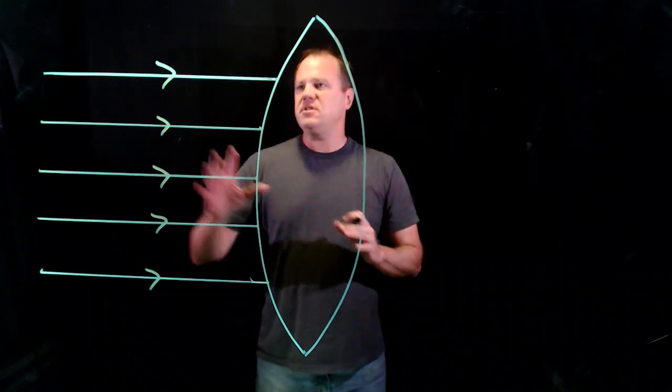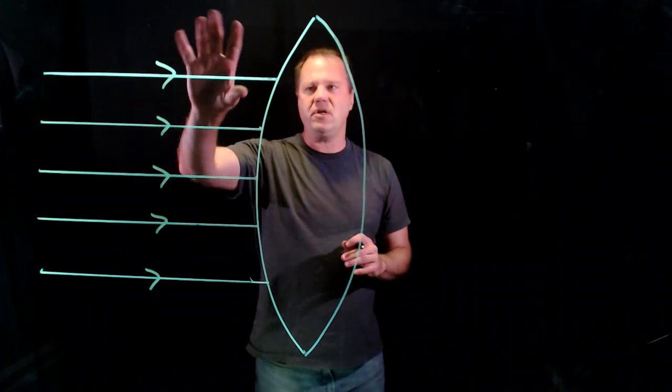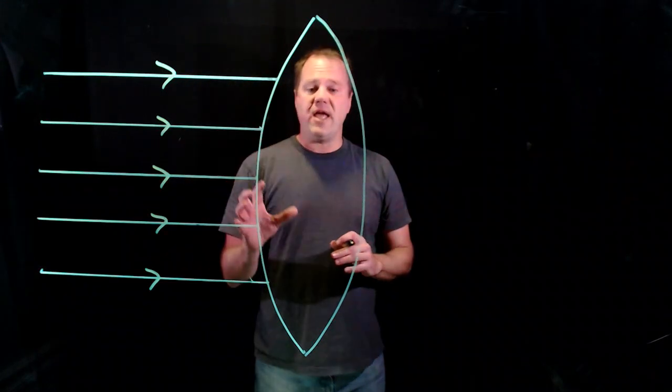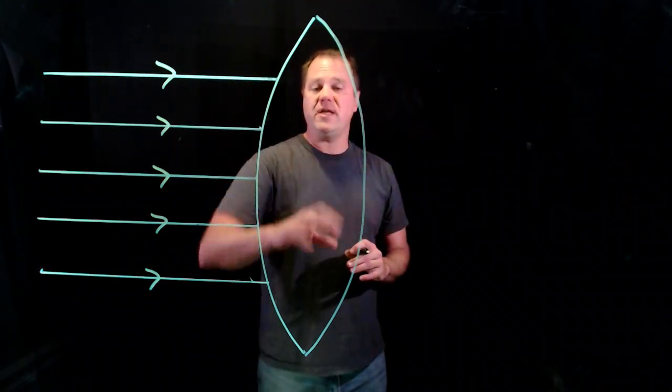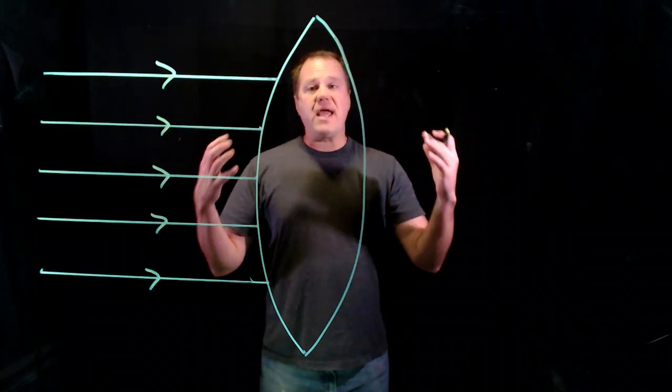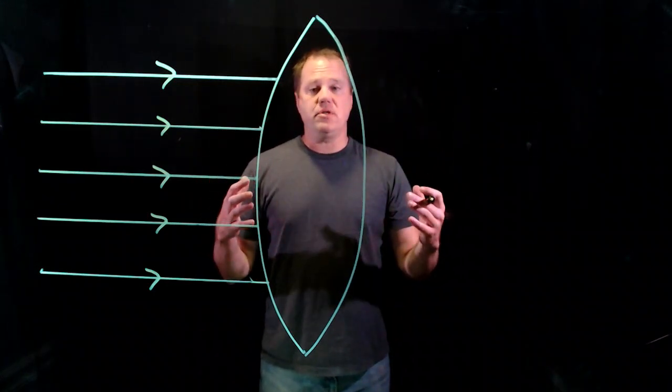And what happens is because the index of refraction outside the lens is different than the index of refraction of the lens itself, the light will bend when it encounters this new medium.